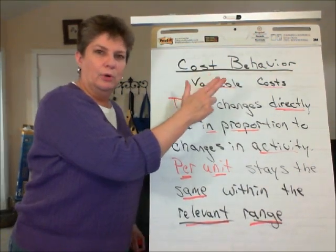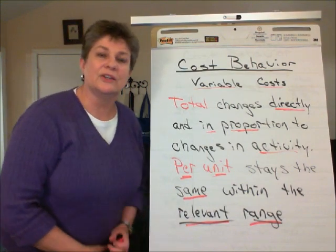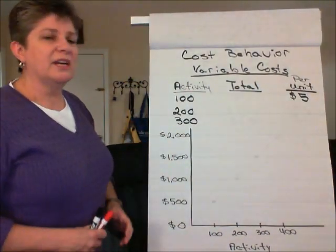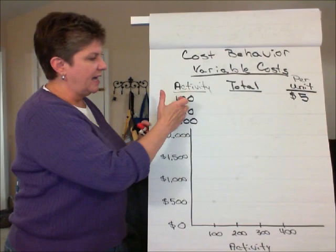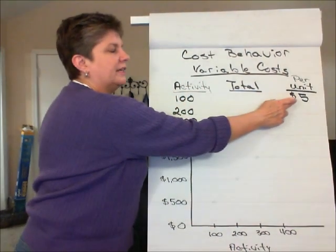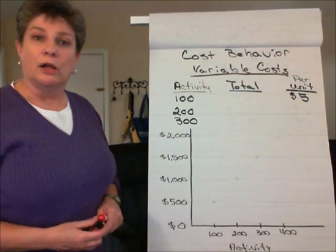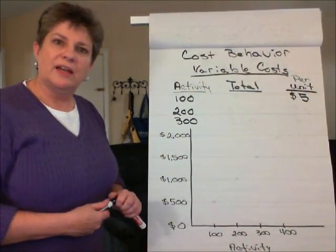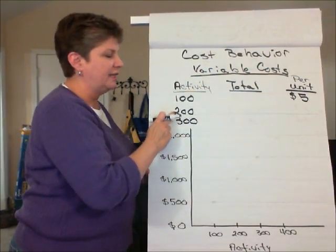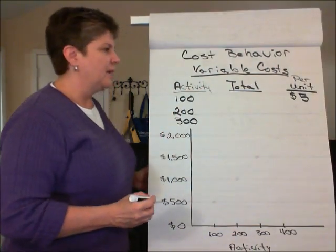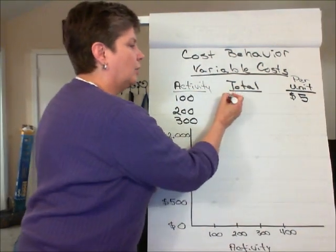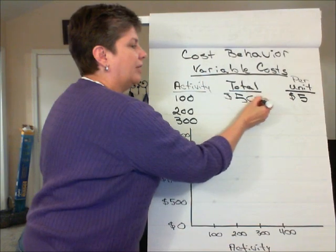That's a variable cost. Now let's take a look at some numbers as examples of variable cost. Here's a set of information — I've got different levels of activity, three different levels of activity. I'm also given that the per unit cost is five dollars per unit. With that information, I can predict what the cost will be in total at each of these three levels of activity. So at one hundred units, if the per unit cost is five dollars, then naturally my total cost is going to be five hundred dollars.